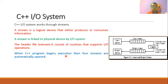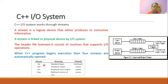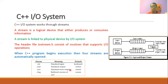Whenever a C++ program starts execution, four streams are automatically opened. The first stream is called cin, which is the standard input stream where the default device is the keyboard. cout is the standard output stream for which the default device is the monitor screen. cerr is the standard error output where the default device is again the screen. clog is the buffered version of cerr where the default device is the monitor screen.